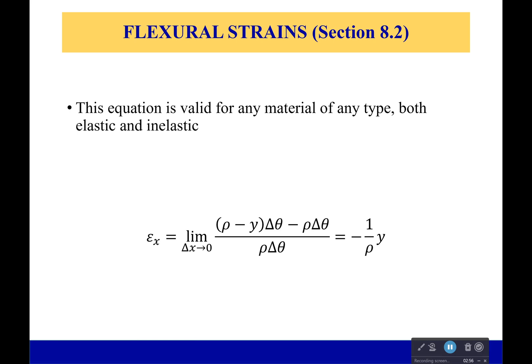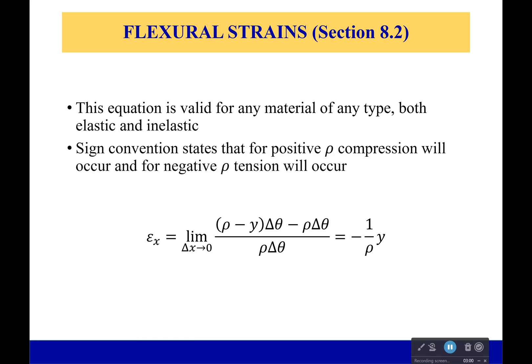This equation would be valid for any material at any time, both elastic and inelastic, because it's a strain equation. It's nice and simple. If you want to look at sign conventions, the radius of curvature will be positive for compression and negative for tension. That makes sense because our strain should be positive for tension, and therefore the only way to make this positive is to have a negative radius of curvature.